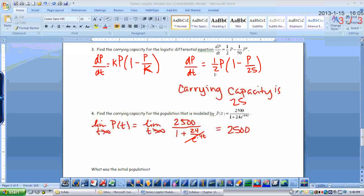So to find the carrying capacity from the differential equation, you need to put it into this form where in parentheses you have 1 minus p over 25. When you're asked to find the carrying capacity of the actual population equation, you want to take the limit as t approaches infinity. And that makes complete sense because the carrying capacity is the population as time goes on and on and on or as time approaches infinity.